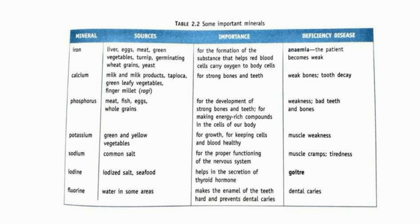Next mineral is calcium. Sources are milk and milk products, tapioca, green leafy vegetables, and finger millets (ragi). Calcium is important for strong bones and teeth. Deficiency may cause weak bones and tooth decay.